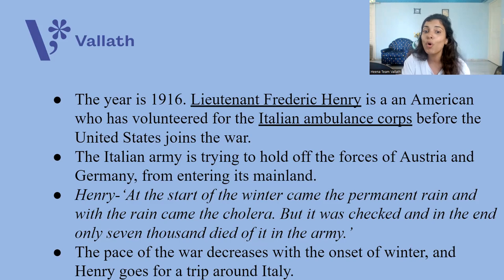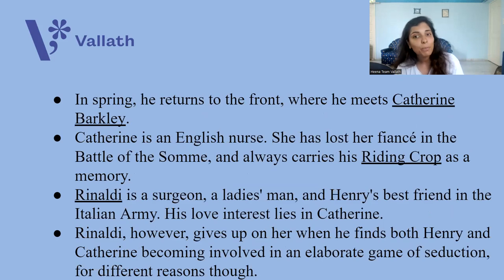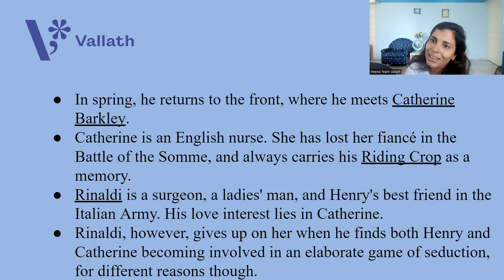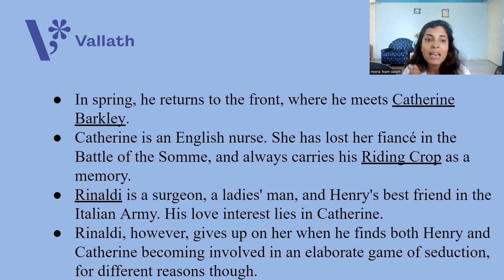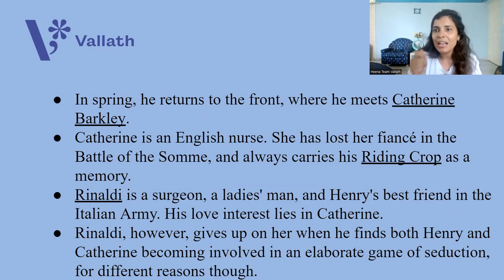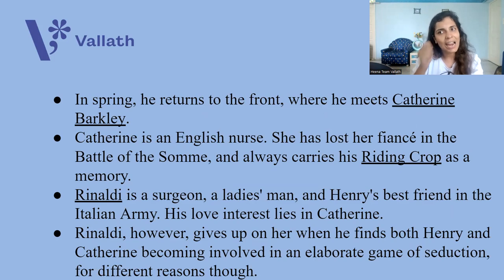Therefore, Henry decides to go for a trip around Italy, since he's from America and wants to travel. In spring, he returns to the front where he meets a woman called Catherine Barclay — the heroine of this novel. Catherine is an English nurse who is serving in Italy. Recently, she lost her fiancé in the Battle of the Somme, and she always carries his riding crop as a memory. A riding crop is a whip used to control horses. Catherine cannot get over her dead fiancé.